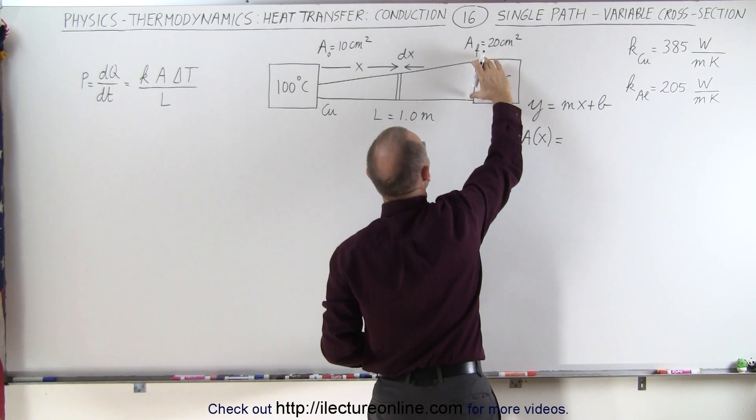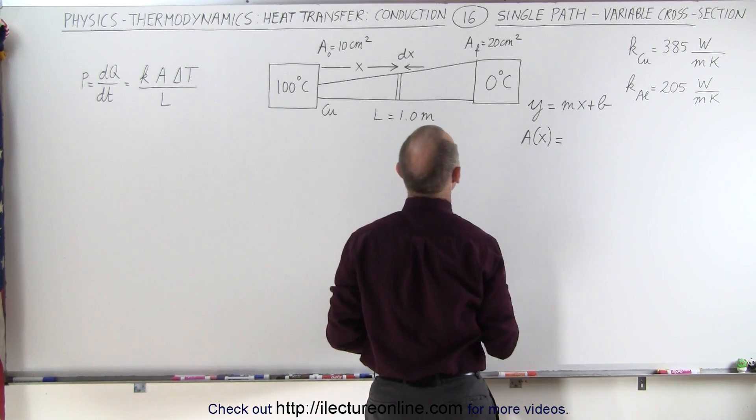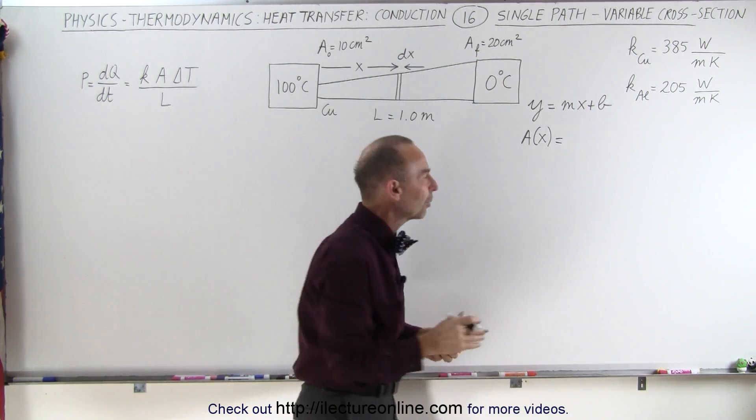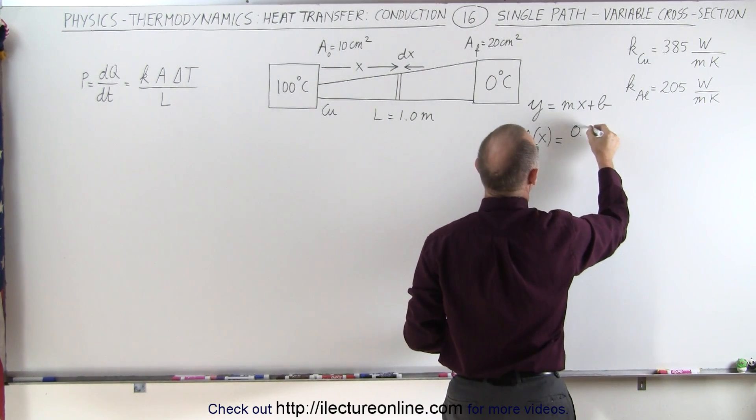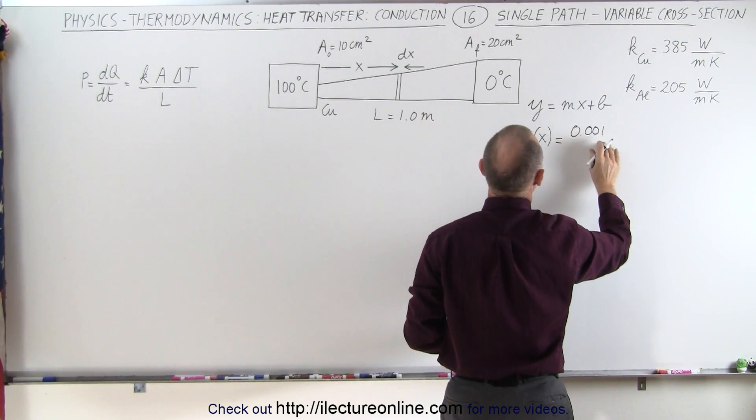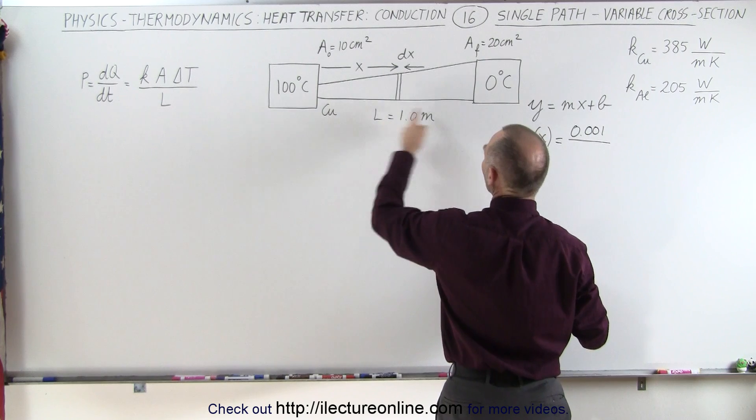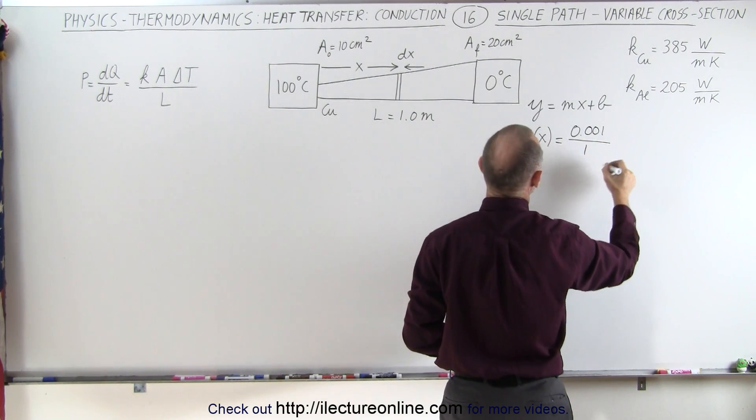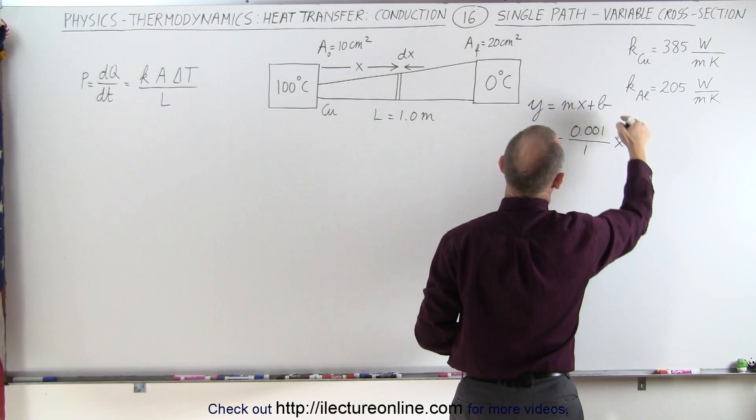Now, what's the slope? The change is 10 square centimeters. Of course, converted to square meters. That would be 0.001 square meters divided by the distance traveled, which is 1 meter, times x plus b.